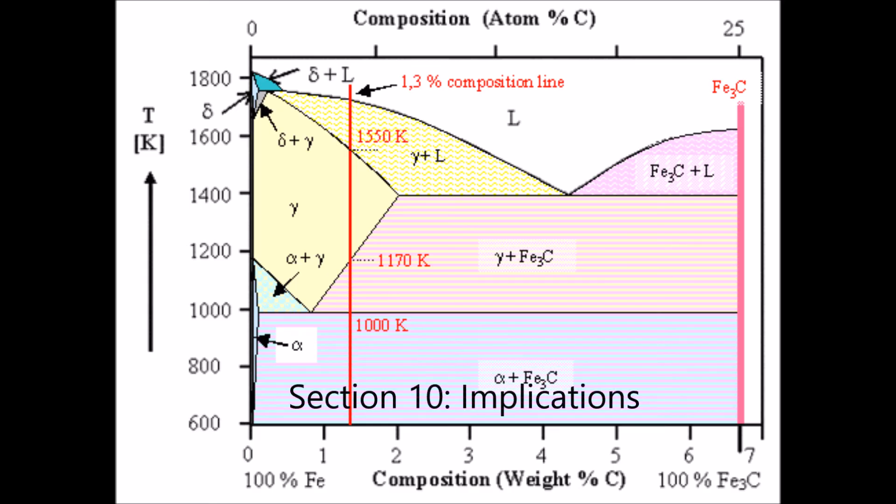In plain carbon steels, gamma-iron exists at high temperatures and has the iron atoms in the FCC crystal structure. Upon cooling this gamma-iron, we form alpha-iron as a product, which has the BCC crystal structure. The difference between crystal structures of the two forms of iron mean that the maximum solubility of carbon in alpha-iron is lower than in gamma-iron, which can be seen on the iron-carbon metastable phase diagram.